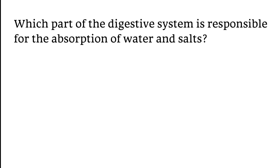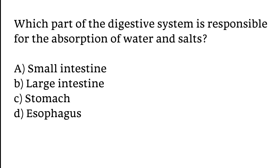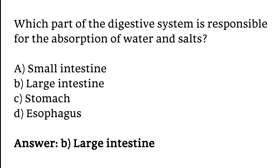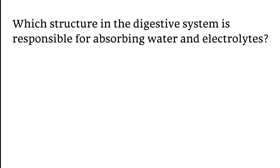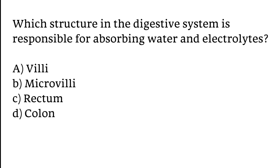Which part of the digestive system is responsible for the absorption of water and salts? The correct answer is option B. The large intestine is responsible for the absorption of water and salts. The correct answer is option D. The colon structure in the digestive system is responsible for absorbing water and electrolytes.